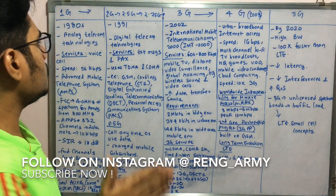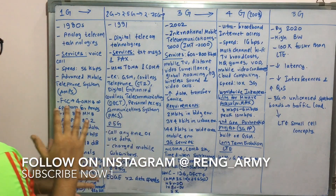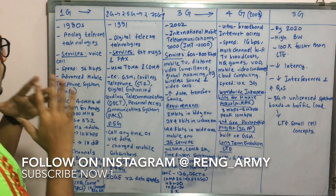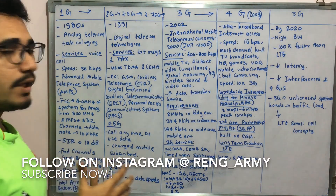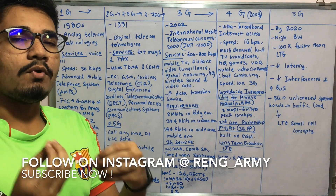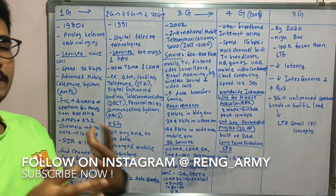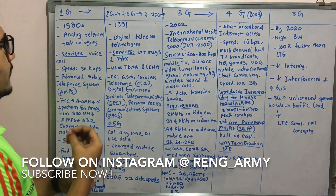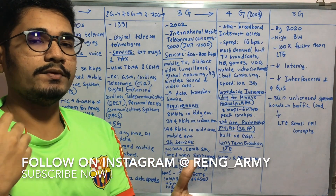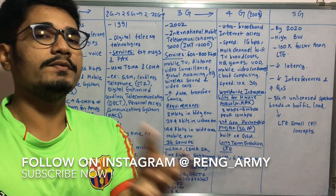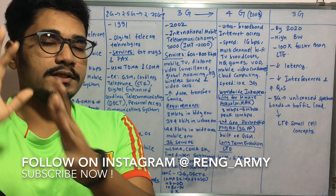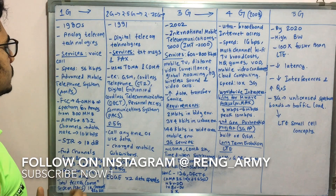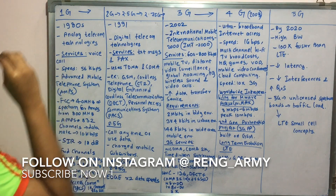Let's begin with the very first generation. 1G came in the 1980s and mainly focused on analog telecommunication technologies. It had limited voice services — only voice calls on telephone systems — enabling communication between end users and telephone offices. It offered a speed of about 56 kbps.